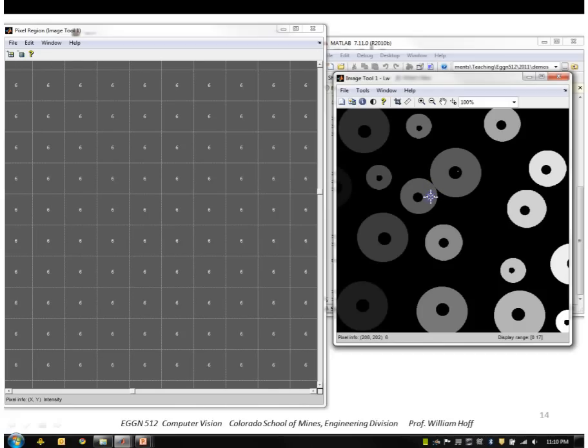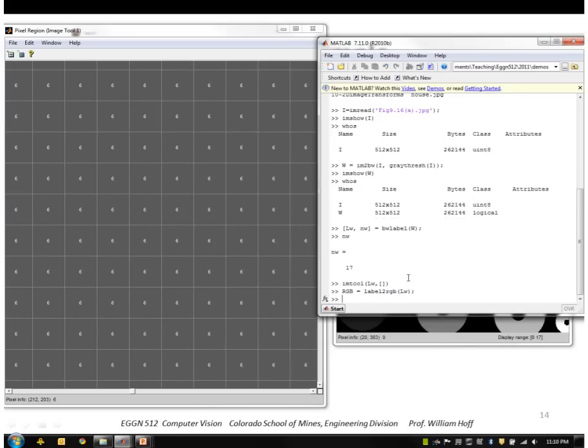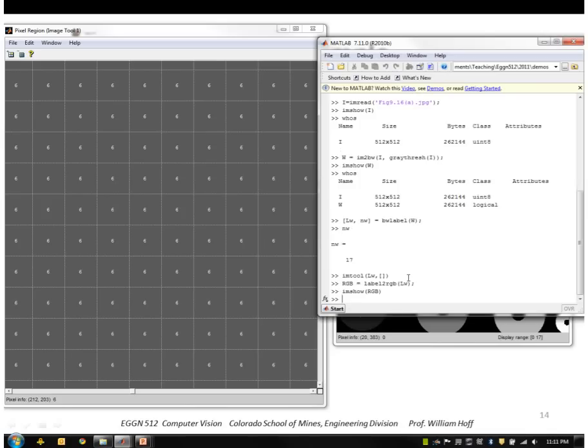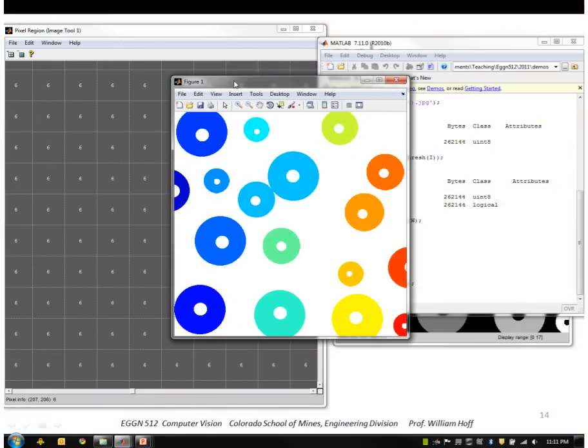So finally, we can visualize these labels a little easier by doing a false coloring on them. There's a function called Label2RGB. So I'll apply that to the label image, and I'll get a color image that I'll call RGB. So this is the result of that. So it's randomly assigned a color to each of those unique labels that it found there.